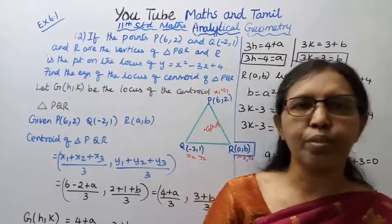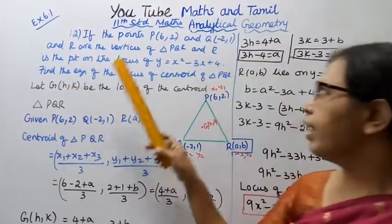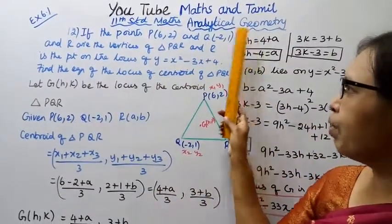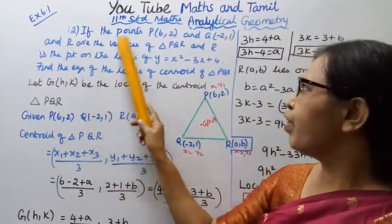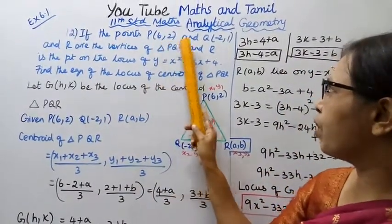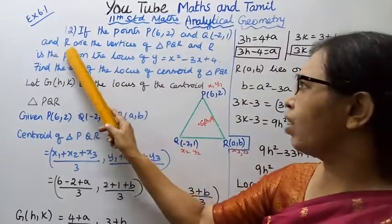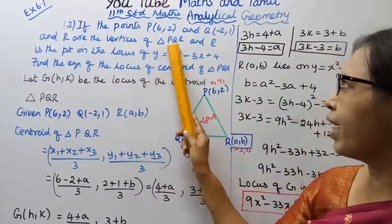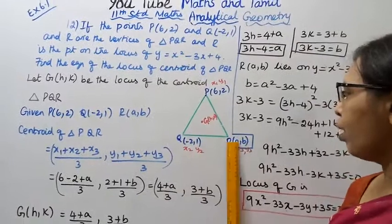Hello students, welcome to Max and Tamil channel. 11th standard Max analytical geometry, exercise 6.1, problem 12: if the points P(6,2) and Q(-2,1) and R are the vertices of triangle PQR,